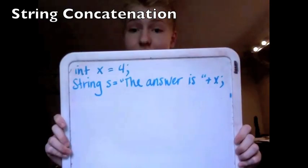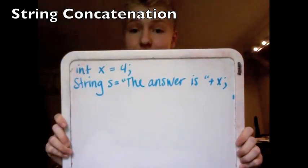String concatenation is denoted by +, as in Java, but Python does not do implicit conversions to string type, so you've got to explicitly change the type before concatenating. This is not the case in Java — string conversions can be implicit. So in Java we would do this, whereas in Python we'd have to convert the integer to a string first, like so.